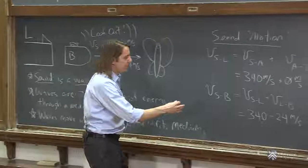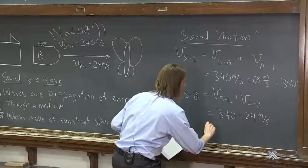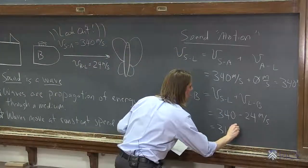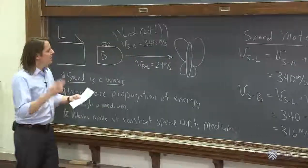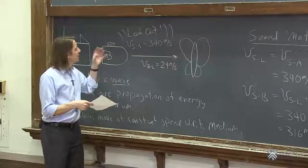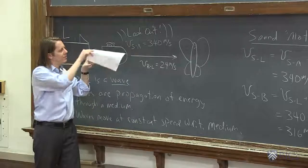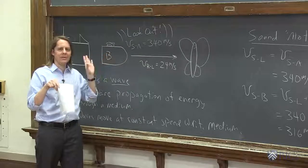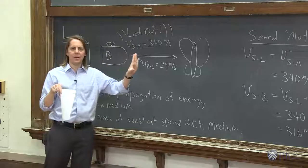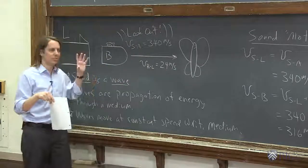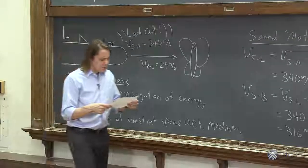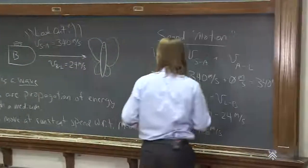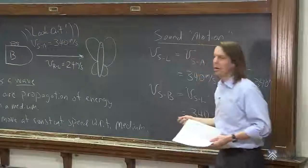So we get 316 meters per second. So even though we think of sound as going at 340, this ant, since it's moving, and since the sound moves with respect to the air, it actually sees the sound go a little bit slower in this direction. Might see it faster in that direction, but slower this way. So that's what the ant would do if it didn't have a rock.